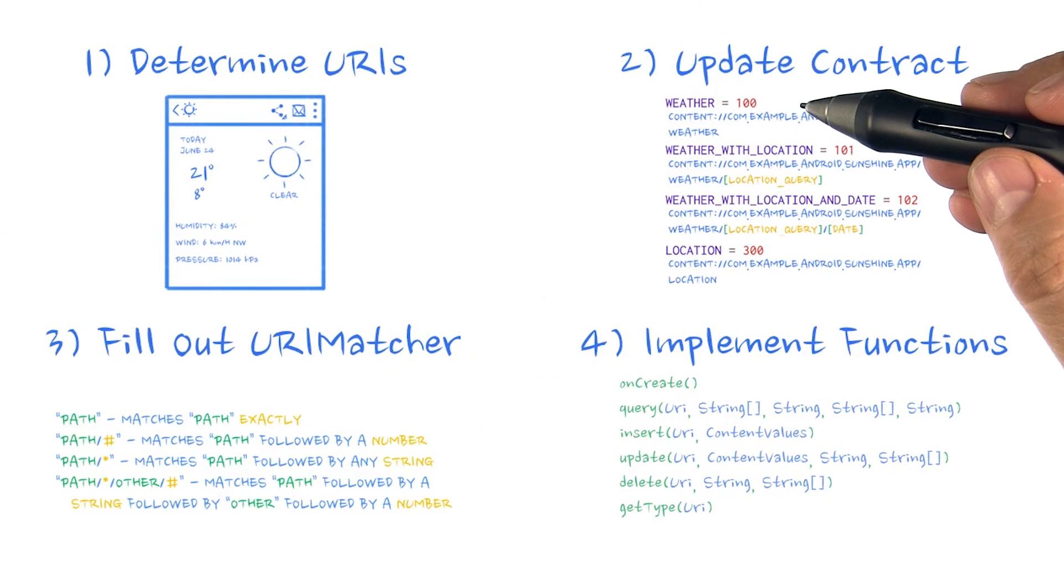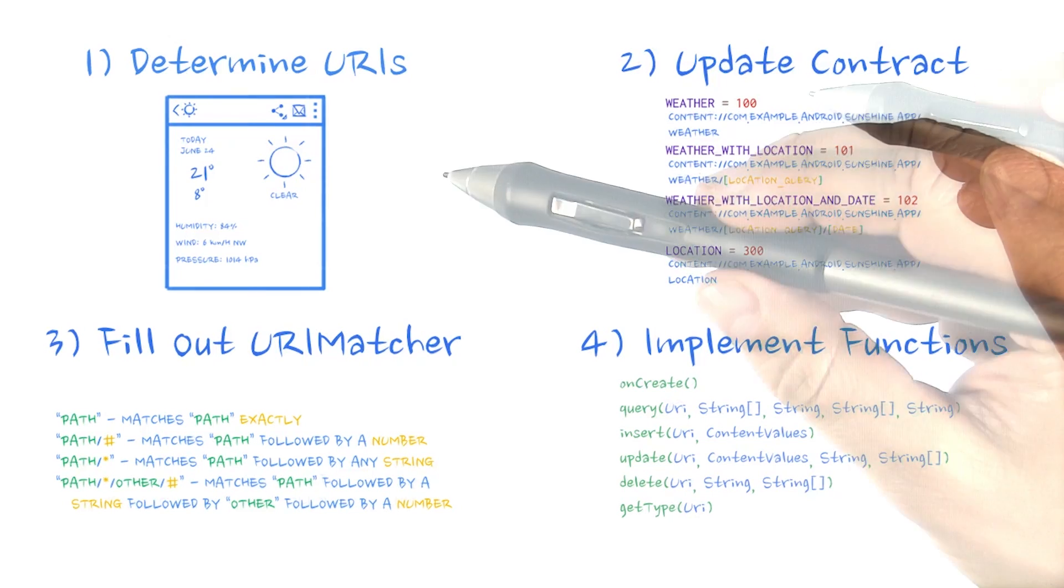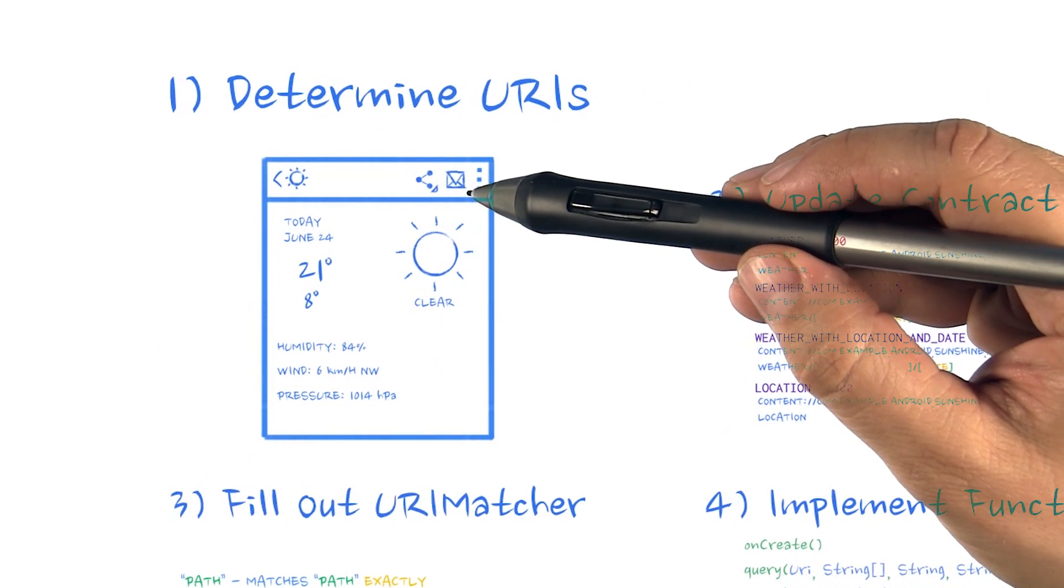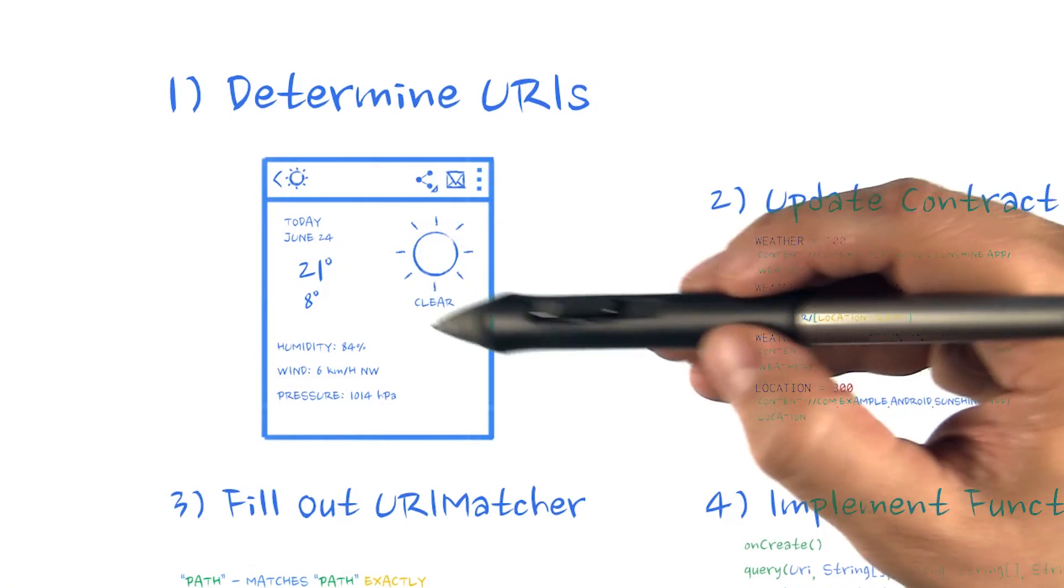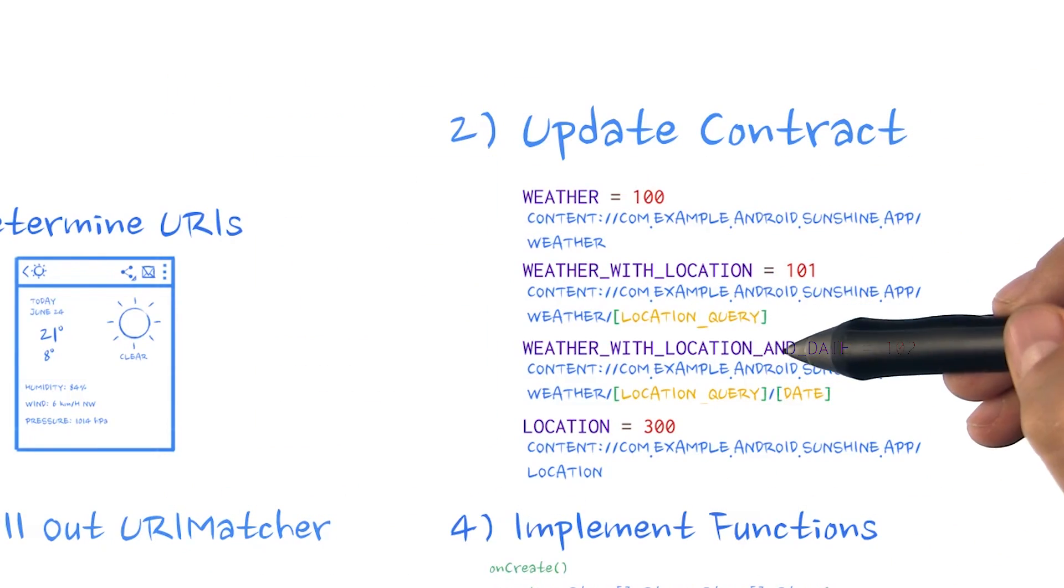And that's it. We've finished creating our content provider. Since this has been an involved section, let's talk about what we created. We started off by defining the URIs that our content provider will support. We then updated our contract to reflect these URIs.